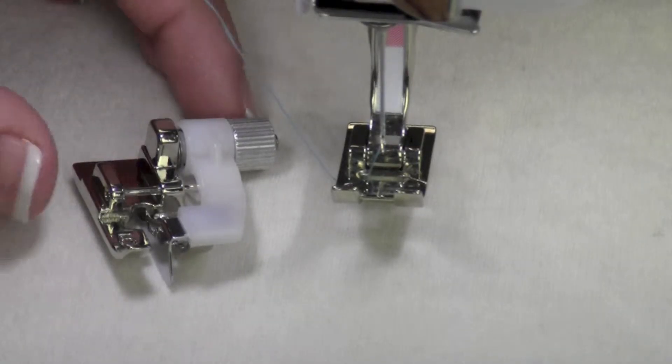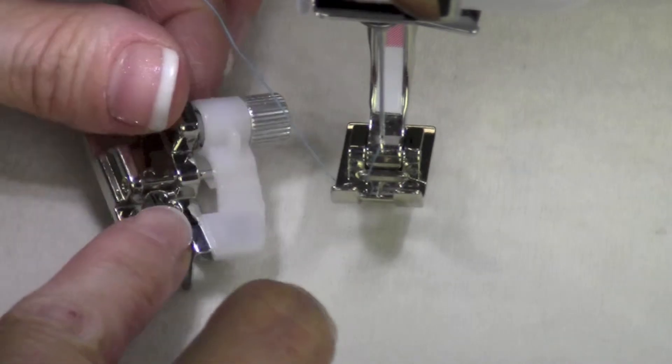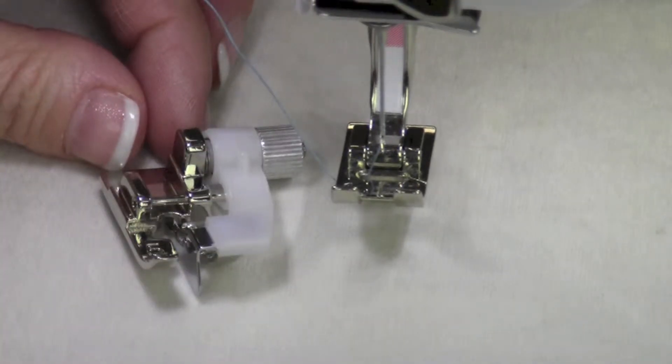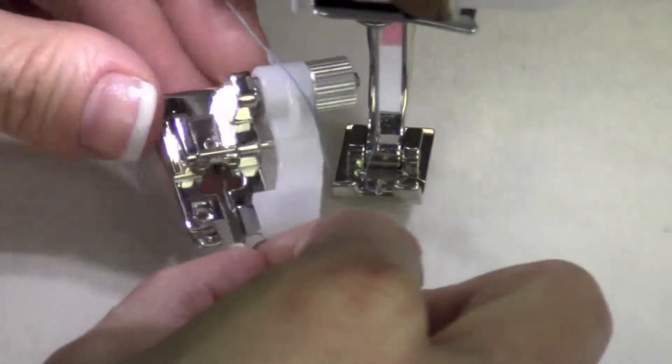Sewing a blind hem on the Bernina is actually quite easy. We're going to start by selecting stitch number 7. That blind hem stitch will recommend foot number 5.